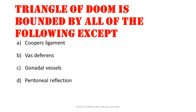Triangle of doom is bounded by all of the following except — again an exception question, so be clear. Options: Cooper's ligament, vas deferens, gonadal vessels, or peritoneal reflection. The answer is Cooper's ligament. Just go and read out the exact boundaries of the triangle of doom, as that might be a question again.